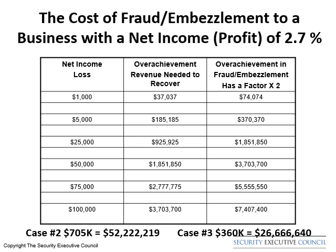Finally, you will note that there are two cases in blue at the bottom of this slide. I investigated both of these cases. Case number two was John's embezzlement of $705,000 — as you can see, it required over $52 million in overachievement. Case number three was an embezzlement of $360,000 that required over $26,600,000 in overachievement to recover. These were two cases in the same company, and once we discovered these, we found others as well.